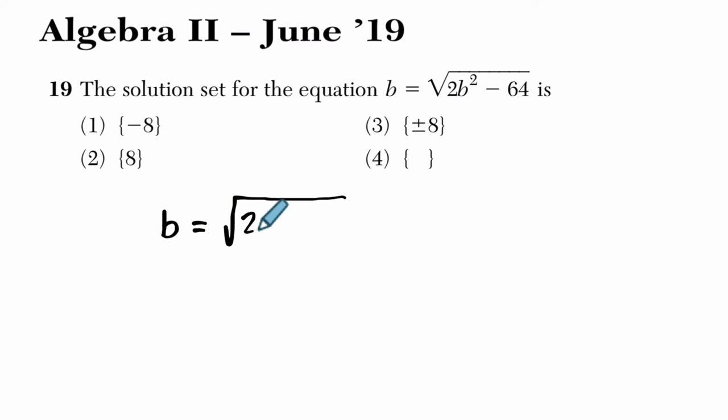So we know that b equals the square root of 2b squared minus 64. The first thing I want to do is square both sides because I want to eliminate the square root. That gets me b squared equals just what's inside here, 2b squared minus 64.